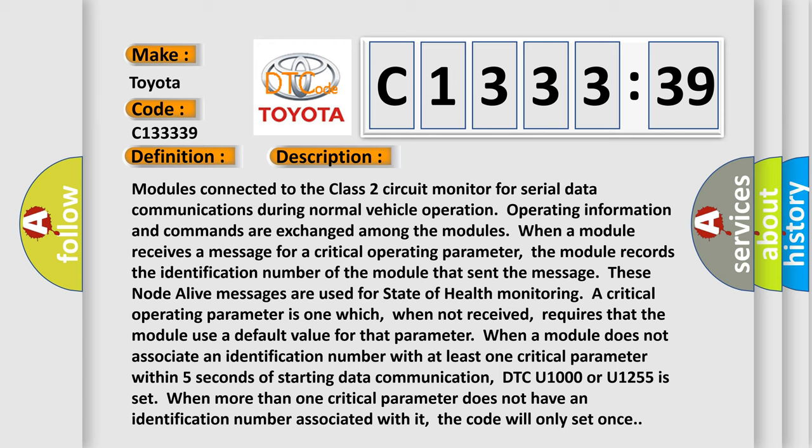And now this is a short description of this DTC code. Modules connected to the Class 2 circuit monitor for serial data communications during normal vehicle operation. Operating information and commands are exchanged among the modules. When a module receives a message for a critical operating parameter, the module records the identification number of the module that sent the message. These node alive messages are used for state of health monitoring.